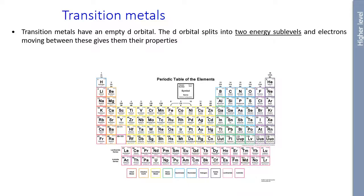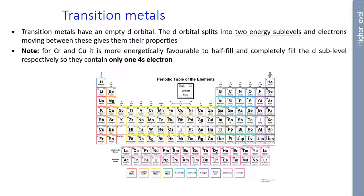Additionally, transition metals have an empty D orbital. And the D orbital splits into two energy sub-levels. And electrons moving between these sub-levels gives the elements their properties that we will discuss further on. Also note that for both chromium, which is here, and for copper, which is here, it is more energetically favorable to half-fill and completely fill the D orbital sub-levels. So they only contain that one S electron. That's the reason why they don't quite follow the Aufbau principles, which we learned earlier.